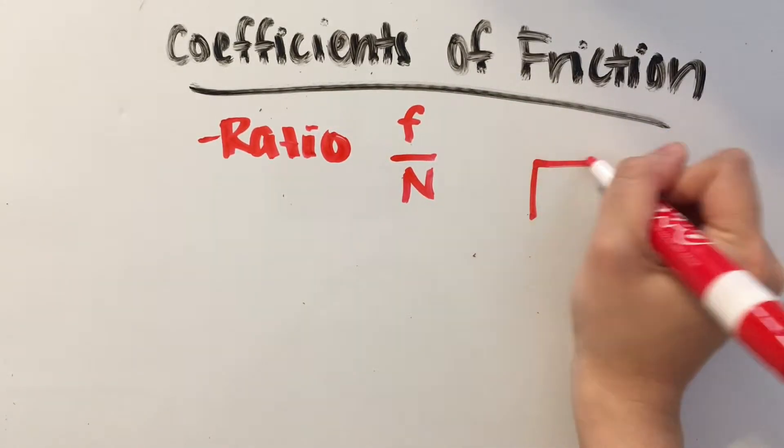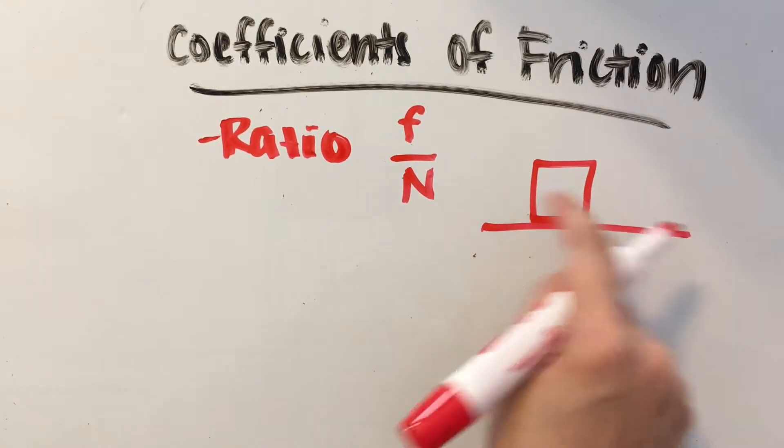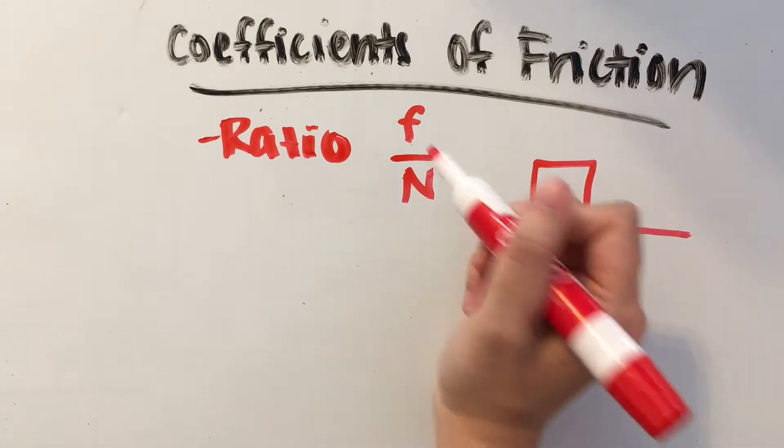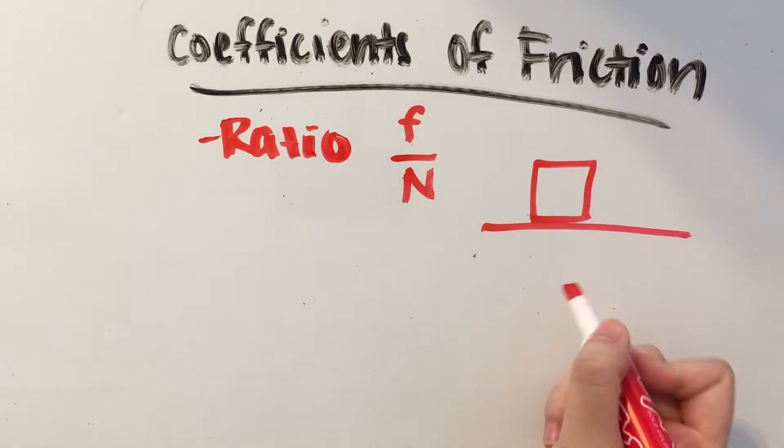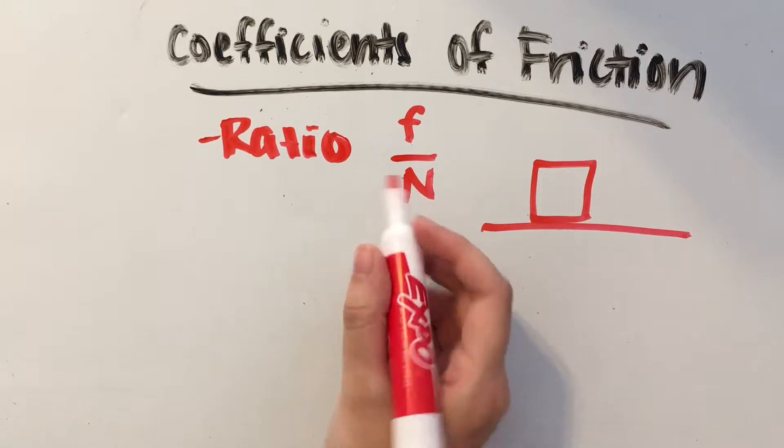So if we have a box on a carpet, then the frictional force in the horizontal direction is what's going to be in our numerator, and the normal force pointing upwards on the box is going to be in our denominator.